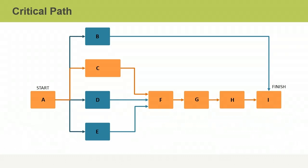In this example, activities A, C, F, G, H, and I are on the critical path.